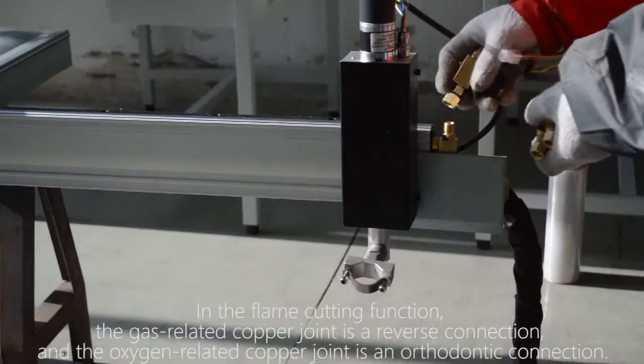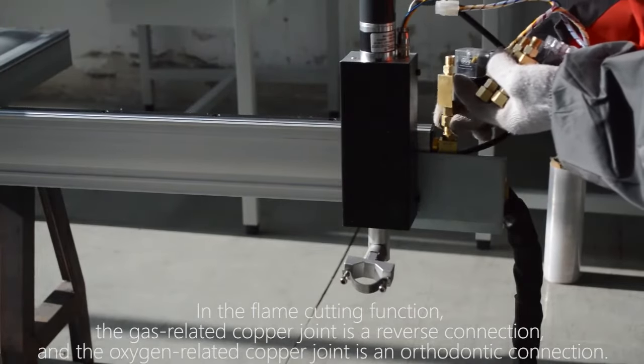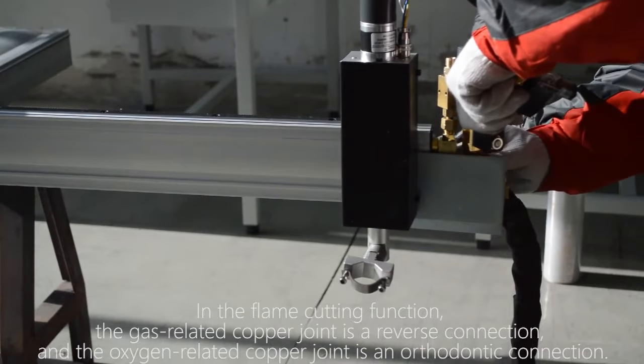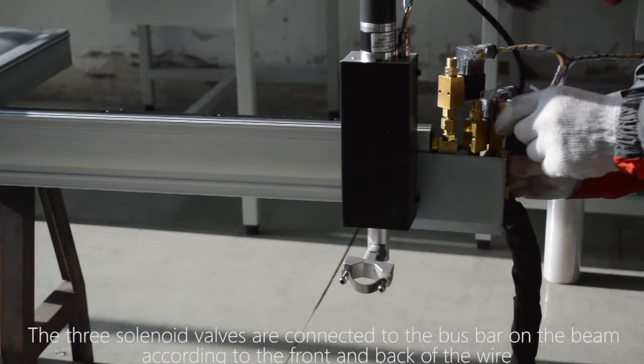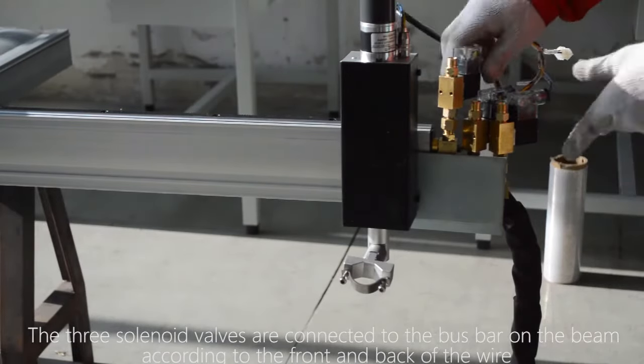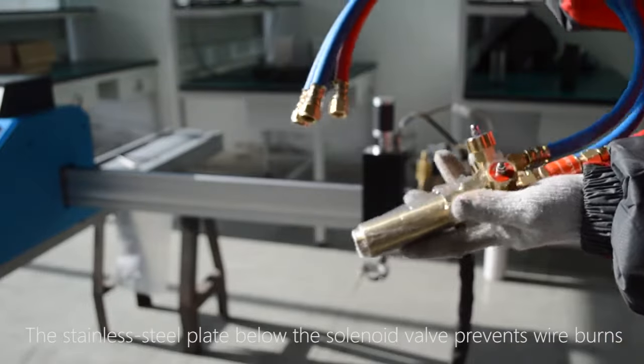In the flame cutting function, the gas related copper joint is a reverse connection and the oxygen related copper joint is an orthodontic connection. The three solenoid valves are connected to the bus bar on the beam according to the front and back of the wire. The stainless steel plate below the solenoid valve prevents wire burns.